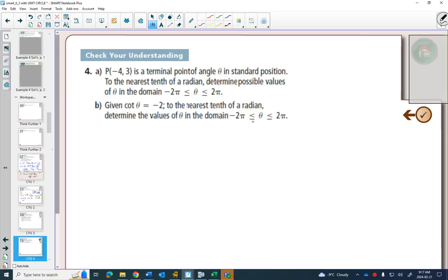For part A, point negative 4, 3 is a terminal point of an angle in standard position. You will get lots of questions like number 4 here. To the nearest tenth of a radian, find the possible values of theta in the domain from negative 2 pi to 2 pi. We're going to start, and this is a very useful strategy, to draw a picture of what's happening.